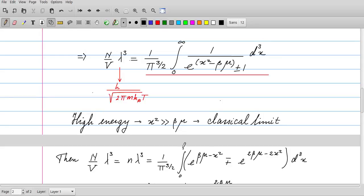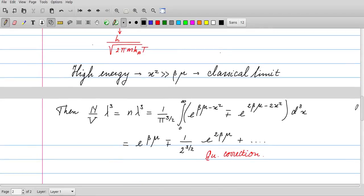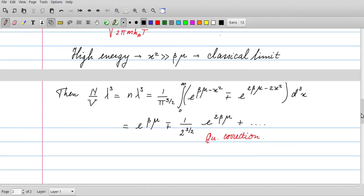We anticipate that the first term should be the classical result, and this is the first quantum correction. If you work it out, you see that this integral leads to e^(βμ) plus 1 over 2^(3/2) and then e^(2βμ). This leads to an expansion in terms of e^(βμ), so e^(βμ) is the parameter which controls the amount of quantum character in the system.